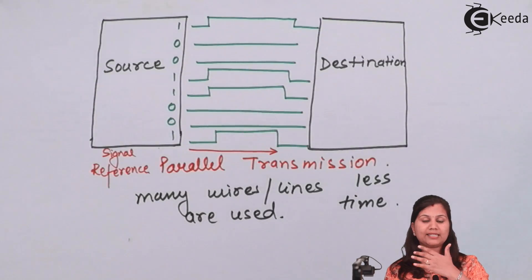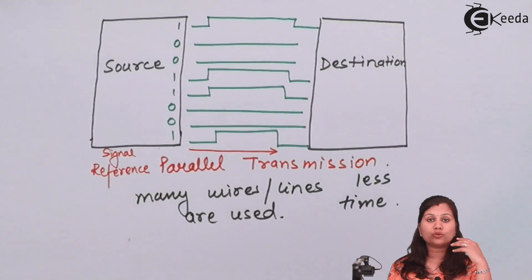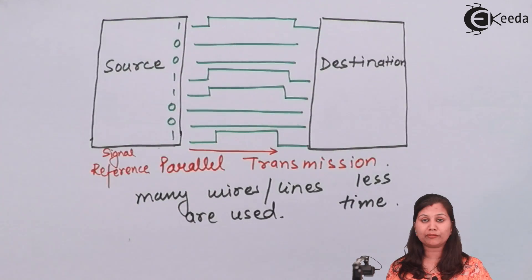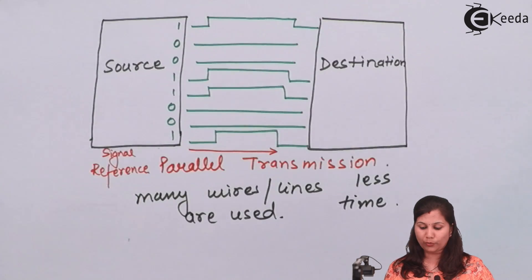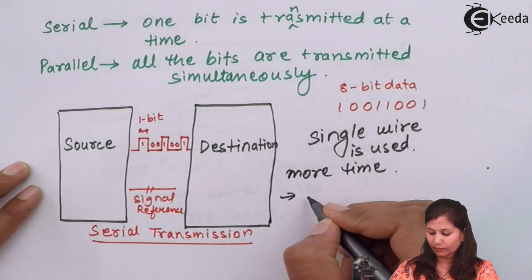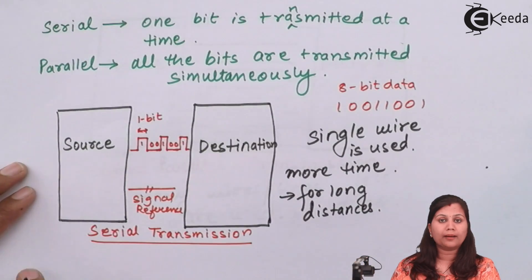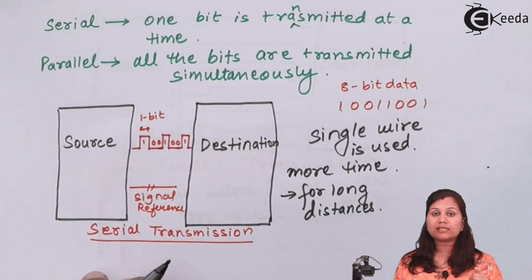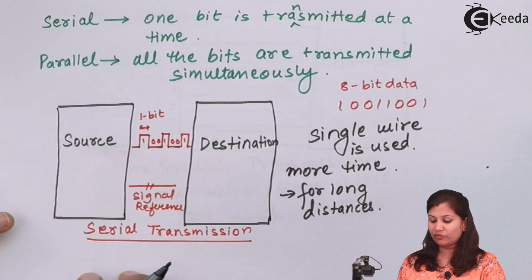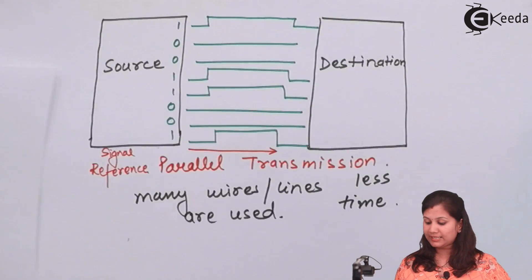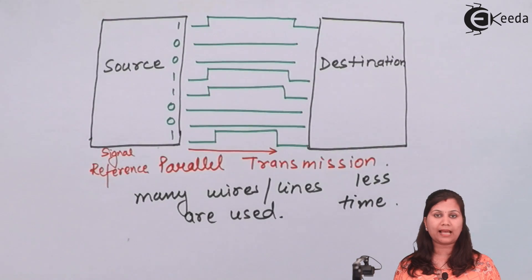When we want to transmit data over long distances, it is very difficult to use parallel transmission because we cannot run so many wires over long distances — each bit requires a separate wire. For example, for 16-bit data we would need 16 lines between the I/O devices and the computer or microprocessor. So for long distances we prefer serial transmission, whereas for short distances parallel transmission is preferred because it is faster.